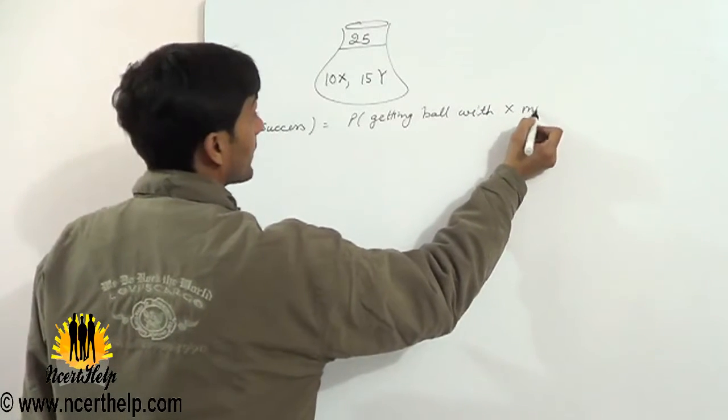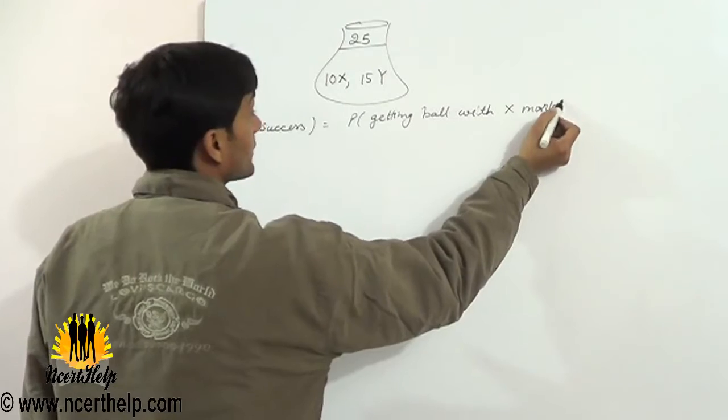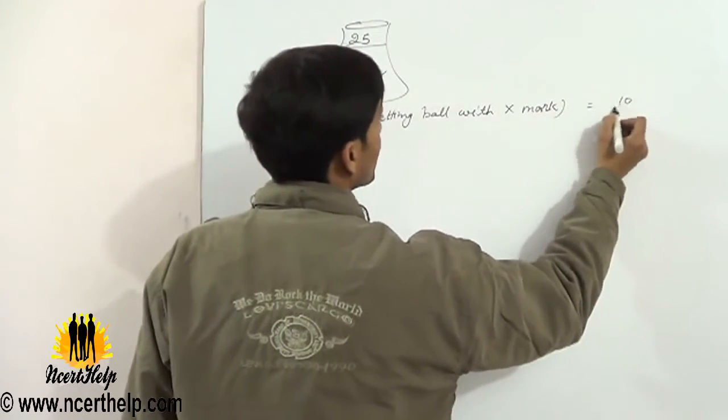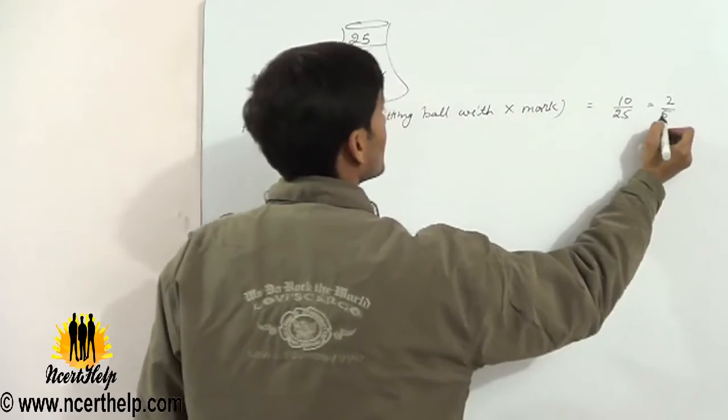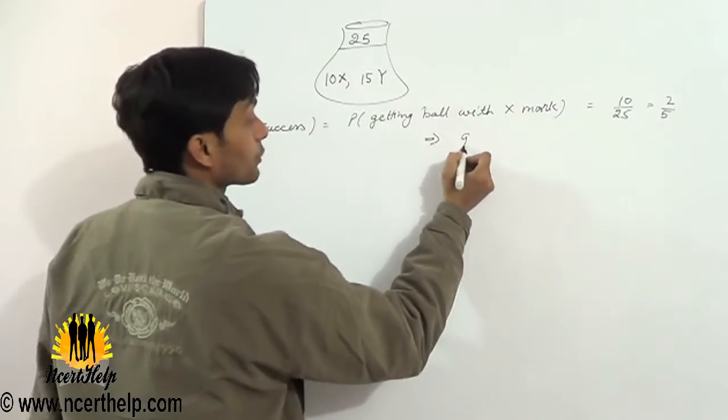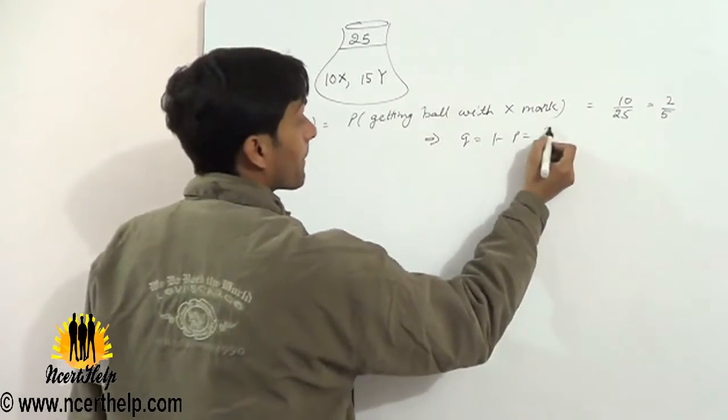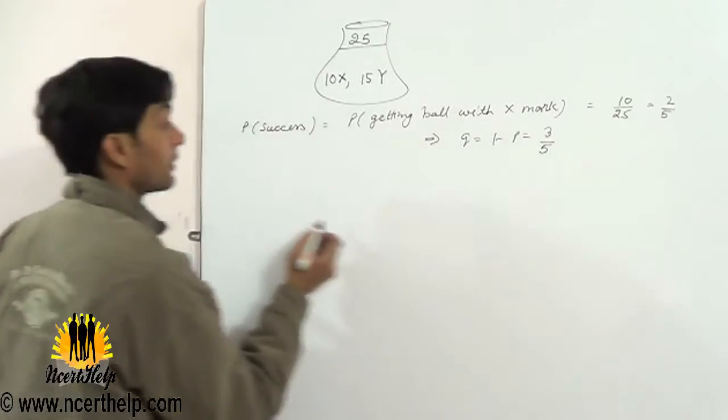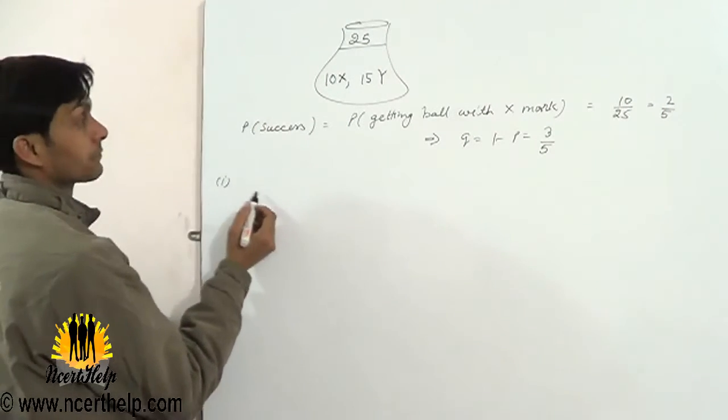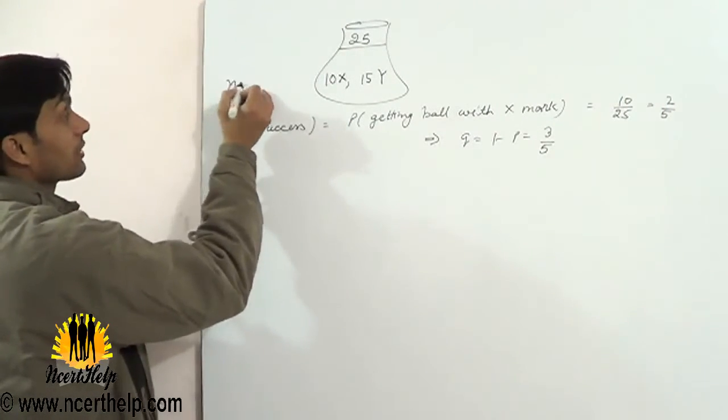The ball with X mark, X mark wali ball ka aana is success, so it will be 10 by 25 or 2 by 5. This implies q will be 3 by 5.